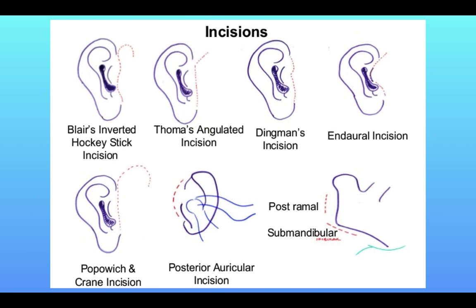Various incisions: Blair's inverted hockey-stick incision is in the pre-auricular crease, angulated superiorly. Thomas's angulated incision is made at a 45-degree angle superiorly. Dingman's incision lies in the pre-auricular crease and is extended more inferiorly into the concheal cartilage of the ear. The Popovich grain is a modification of the pre-auricular incision made in a question-mark shape for better aesthetics, with the superior extension going into the hairline.